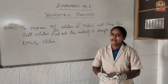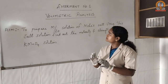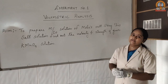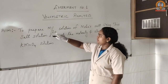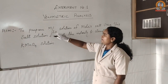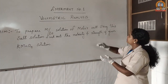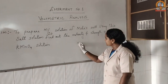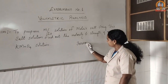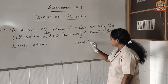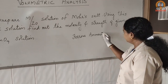We are going to start our online experiments. Our first experiment is volumetric analysis. The aim is to prepare an M/20 solution of Mohr's salt. Mohr's salt is ferrous ammonium sulfate salt.